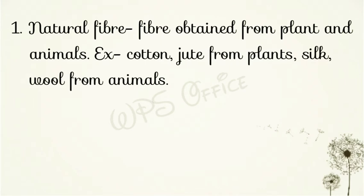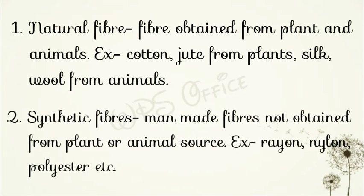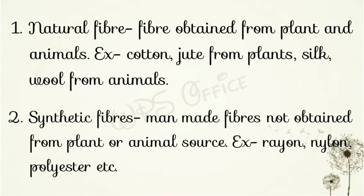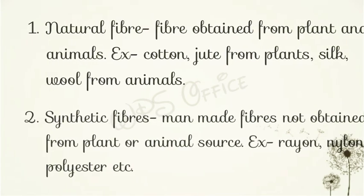Silk यानी रेशम और ऊन जानवरों से प्राप्त होते हैं। The second type is synthetic fibers — man-made fibers not obtained from plants or animal sources. मनुष्य द्वारा निर्मित वे रेशे जो पौधों या जानवरों के स्रोत से नहीं पाए जाते। For example: rayon, nylon, polyester.